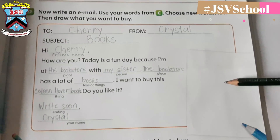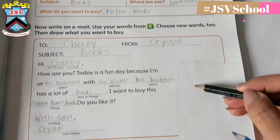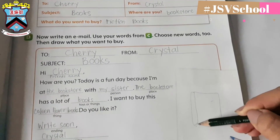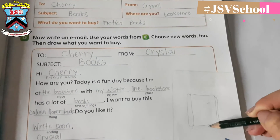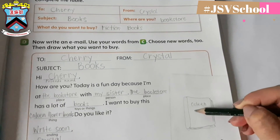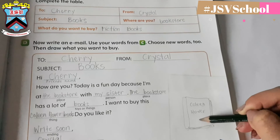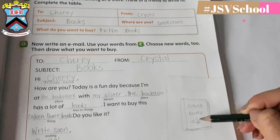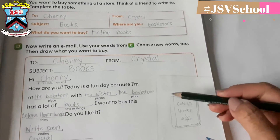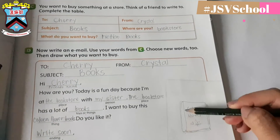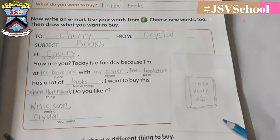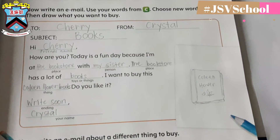After you write your email, I want you to draw the thing that you want to buy. Since Teacher Crystal wants to buy a book, she will draw a book here. Draw what you want to buy and write the name of the item. You are finished with your activity. Now Teacher Crystal will give you time to write your own email and write it in your notebook.